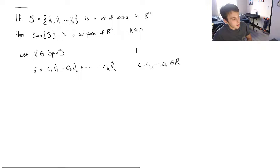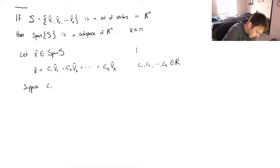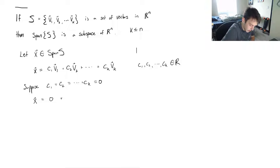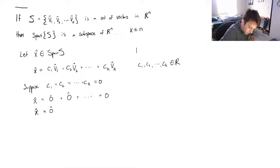First, let's check if the zero vector is in span(S). Suppose c₁, c₂, ..., cₖ are all equal to zero. Then we get 0·v₁ + 0·v₂ + ... + 0·vₖ, which gives us a sum of zero vectors equal to the zero vector. So the zero vector is an element of span(S), and the first condition is satisfied.